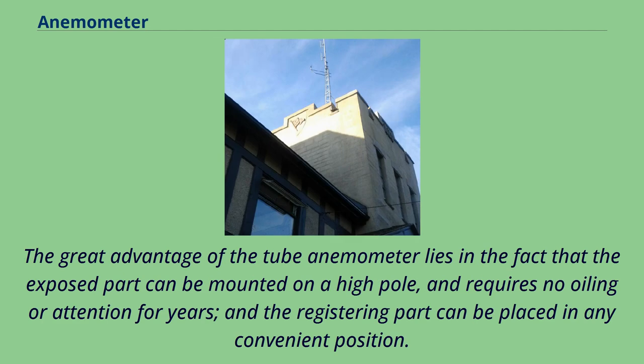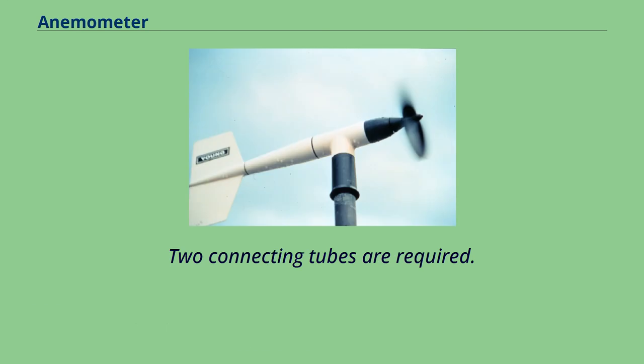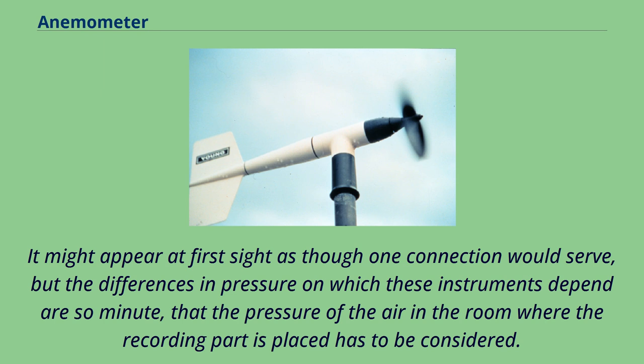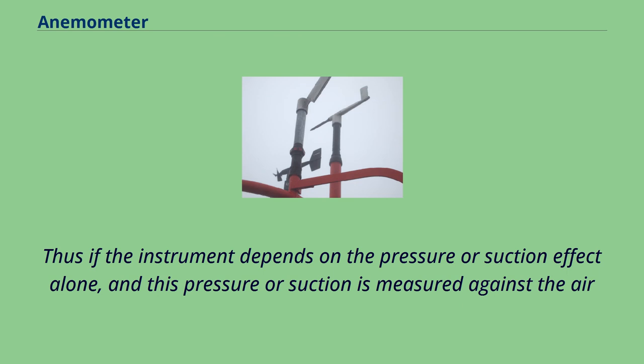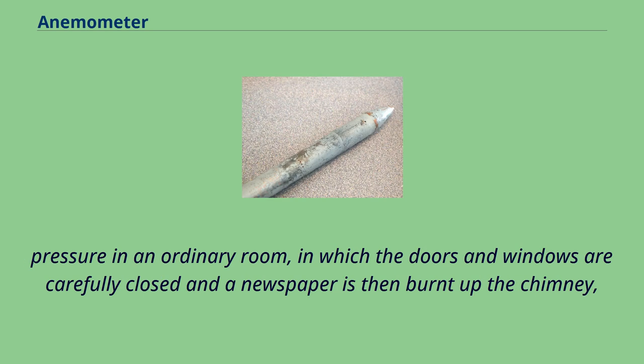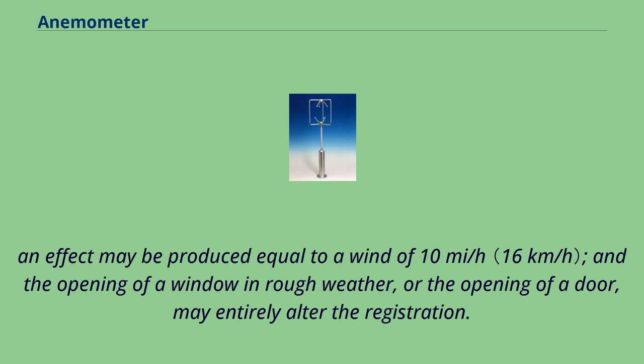The great advantage of the tube anemometer lies in the fact that the exposed part can be mounted on a high pole, and requires no oiling or attention for years, and the registering part can be placed in any convenient position. Two connecting tubes are required. It might appear at first sight as though one connection would serve, but the differences in pressure on which these instruments depend are so minute, that the pressure of the air in the room where the recording part is placed has to be considered. Thus if the instrument depends on the pressure or suction effect alone, and this pressure or suction is measured against the air pressure in an ordinary room, in which the doors and windows are carefully closed and a newspaper is then burned up the chimney, an effect may be produced equal to a wind of 10 miles per hour, and the opening of a window in rough weather, or the opening of a door, may entirely alter the registration.